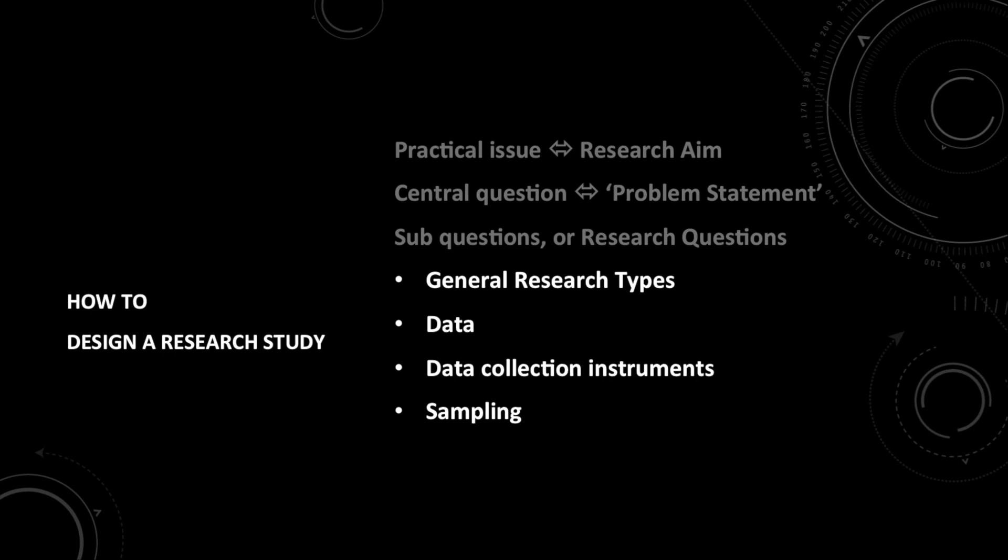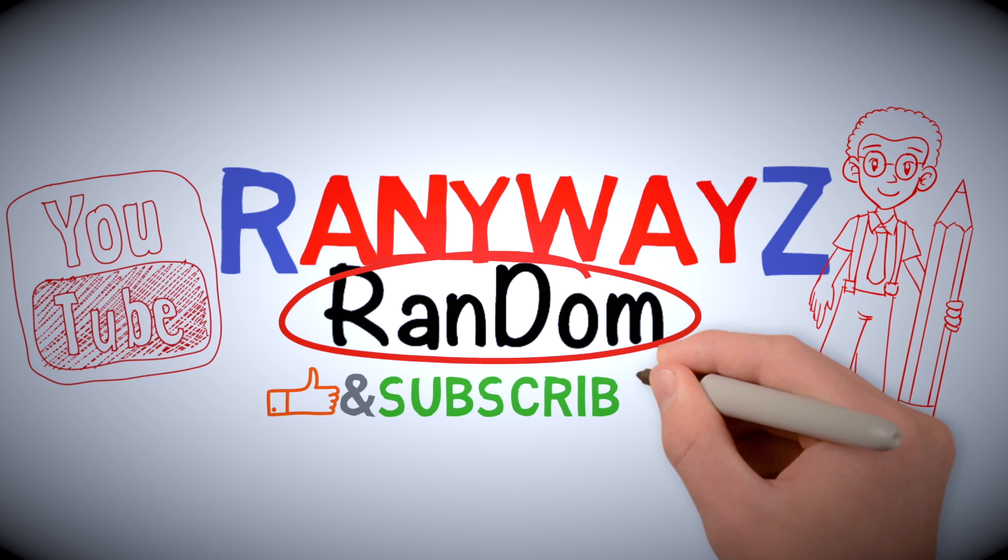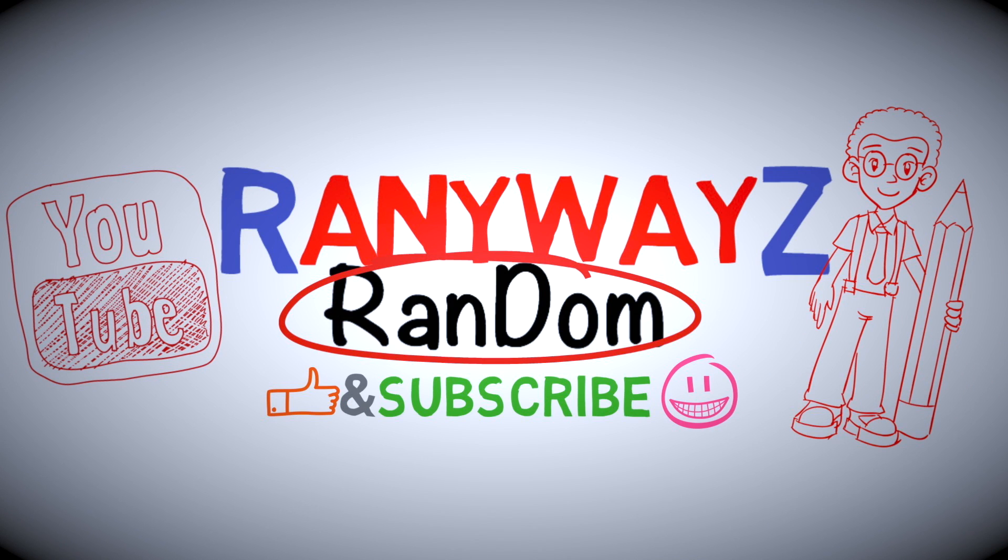All right. So, to sum up, today we discussed three general research types: exploratory, descriptive, and causal. We talked about qualitative versus quantitative data. We looked at four main data collection instruments. And we made a start on the topic of population, sample, and sampling, which means you may now further design your study for the purpose of your module assignment. Thank you very much for watching this Runways Random video. And please like and subscribe. And I will see you next time.